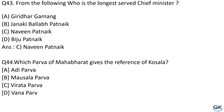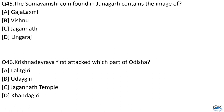Question No. 44: Which Parva of the Mahabharata gives the reference of Kosala? Option A: Adi Parva. Option B: Mausala Parva. Option C: Rata Parva. Option D: Vana Parva. The answer is Option D, Vana Parva. Question No. 45: The Somavamshi coin found in Junagad contains the image of — Option A: Gajalakshmi. Option B: Vishnu. Option C: Jagannath. Option D: Lingaraj. The answer is Option A, Gajalakshmi.